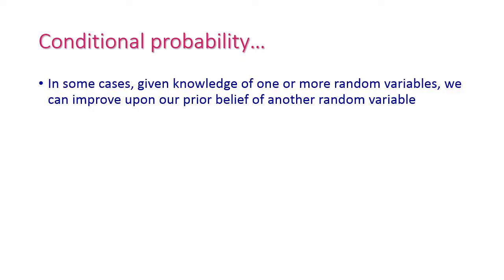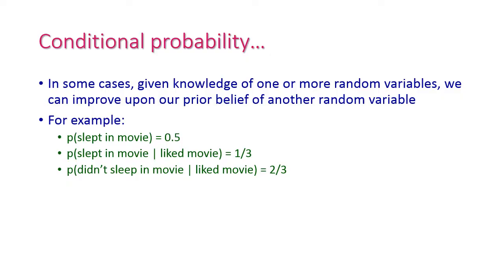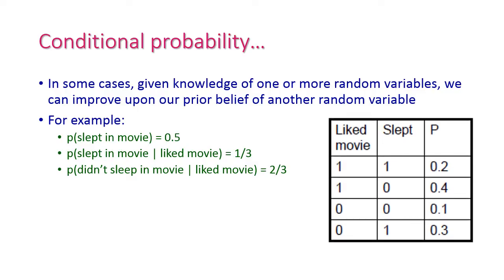Let us see one example. We all like to watch movies and sometimes we can sleep in between a movie. Here 'slept in movie' and 'liked movie' are random variables. The probability of slept in movie is 0.5 (50%). The probability of slept in movie given liked movie is 1/3 (33%). The probability of didn't sleep in movie given liked movie is 2/3, which is 0.67 (67%). This is the probability distribution table for the random variables 'liked movie' and 'slept in movie'.